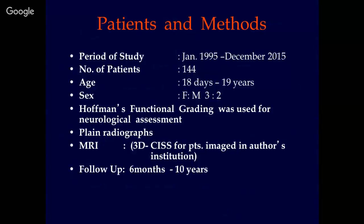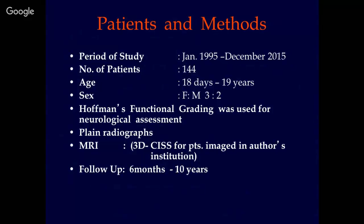The aim of this presentation is to propose a new classification based on clinical presentation, operative findings, complications, outcome, and embryology. Over a 20-year period, we had the opportunity to study 144 patients ranging in age from 18 days to 19 years. We used Hoffman's Functional Grading published in 1985, which I have found over decades of practice to be a clinically easy way to assess patients in the outpatient setting. All patients underwent MRI, and for all patients imaged at our institution we specifically performed 3D CISS images, which we found extremely useful in delineating pathological anatomy. Follow-up ranged from 6 months to 10 years.